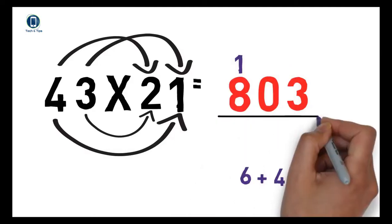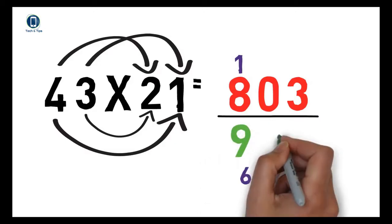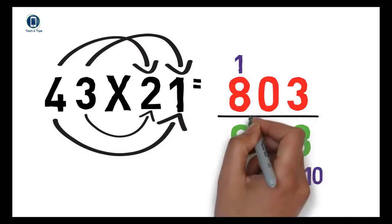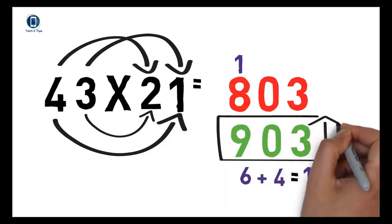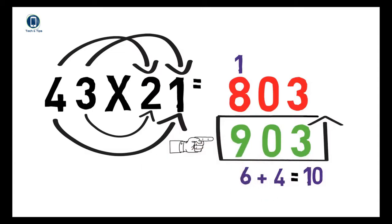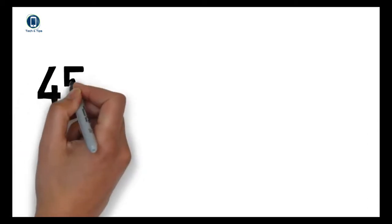get our answer, 903. 43 × 21 equals 903. That's our answer. As simple as that. Now let's take another example: 45 × 34.